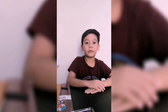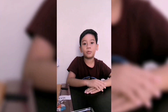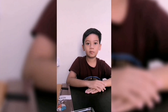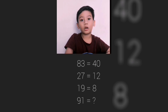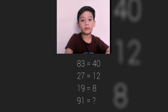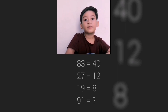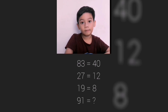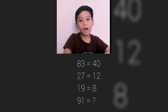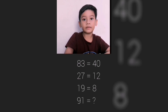Here is a new math brain test to solve. As you can see here: if 83 equals 40, and 27 equals 12, and 19 equals 8, then how about 91?